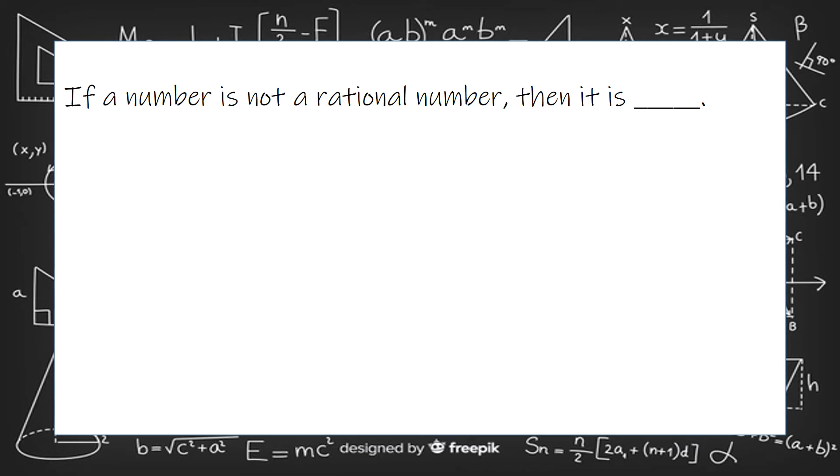Rational numbers are numbers that can be put into fraction form, and blank numbers are numbers that cannot. Those are called irrational numbers. If you're not being rational, you're being irrational.